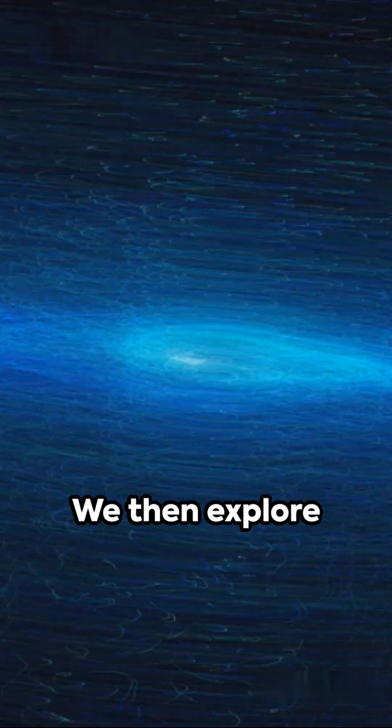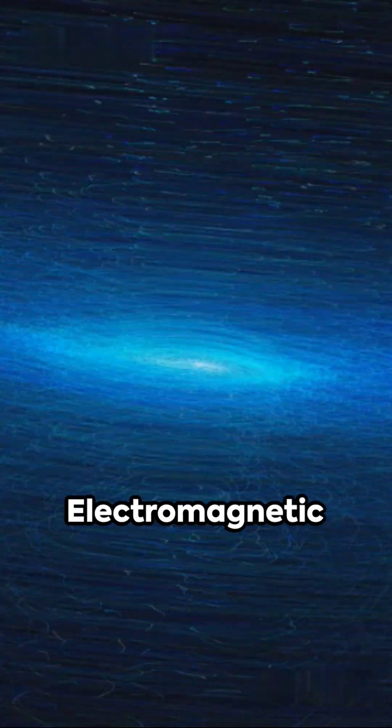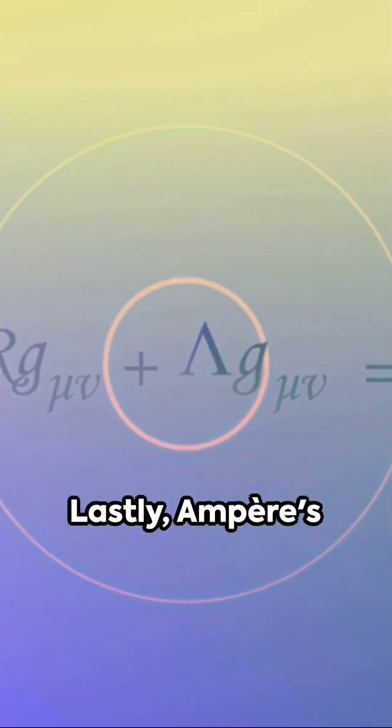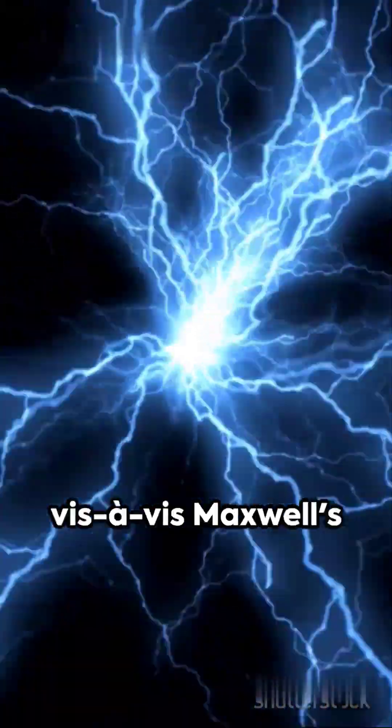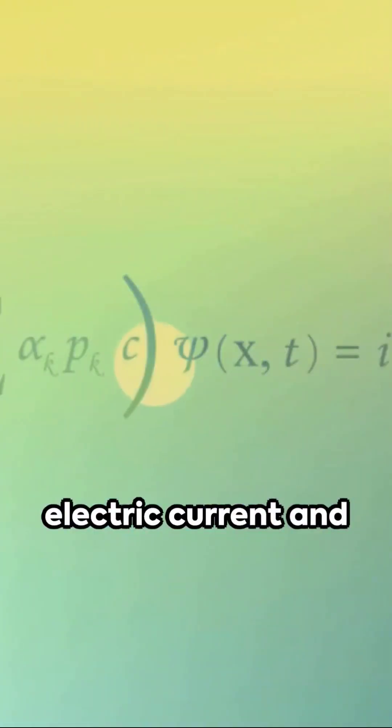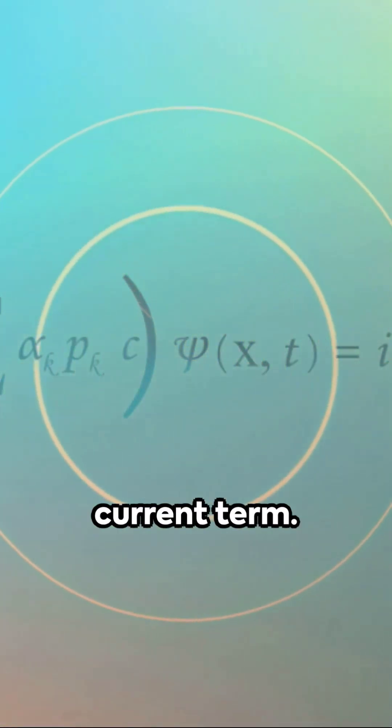We then explore Faraday's law of electromagnetic induction, revealing how changing magnetic fields induce electromotive forces. Lastly, Ampere's circuital law with Maxwell's addition relates magnetic field circulation to electric current and changing electric fields, introducing the displacement current term.